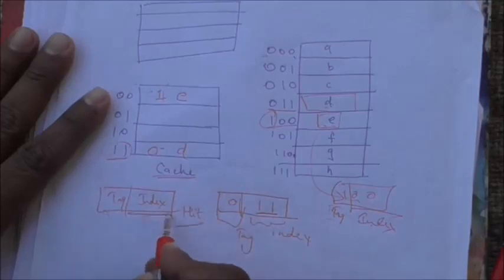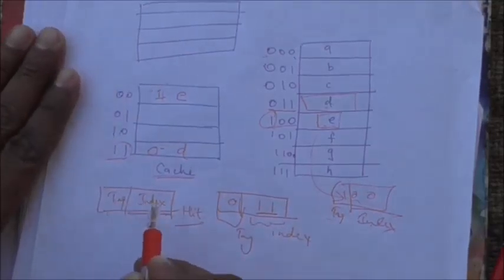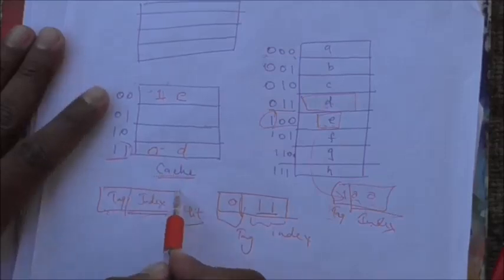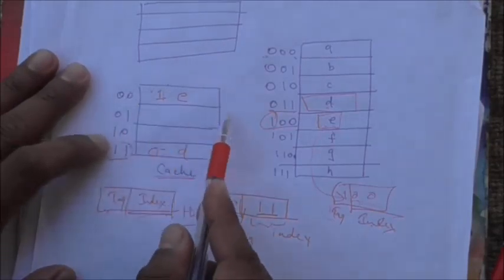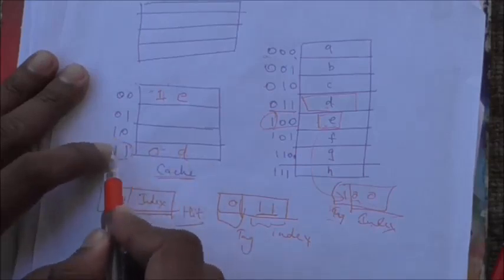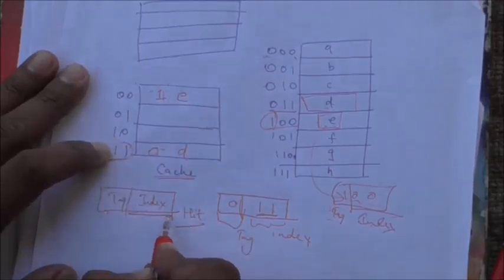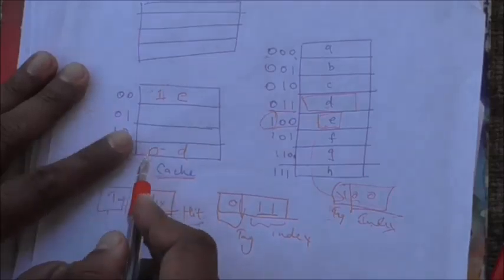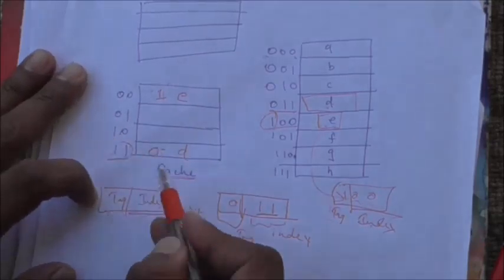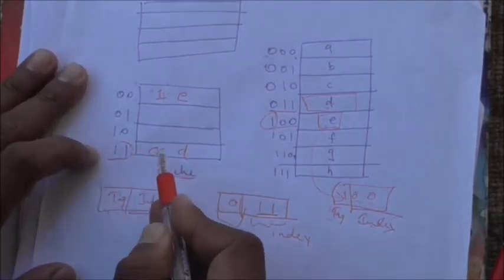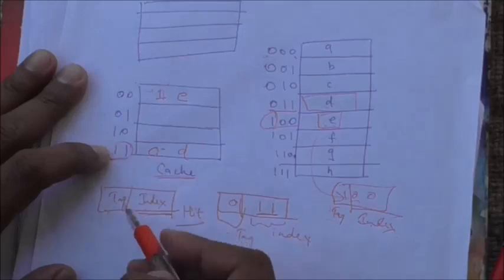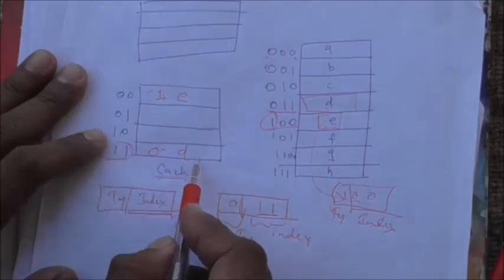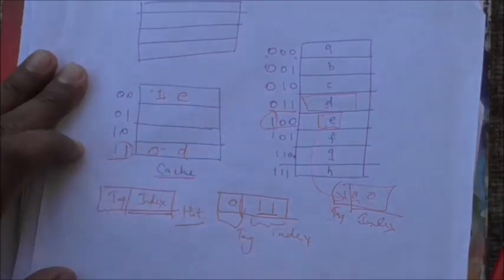Whenever the CPU needs a data item, it first searches in cache. The address generated by the CPU is divided into tag and index parts. The CPU accesses cache at the address equal to the index, then the tag stored with the data item at that location is matched against the tag from the CPU-generated address. If they match, it is a hit and the data item is read and provided to the CPU.